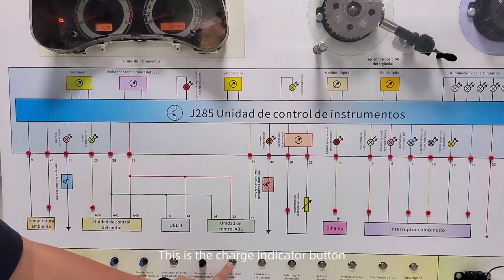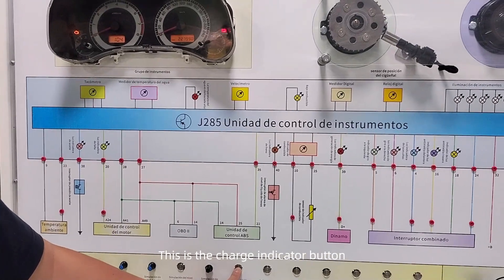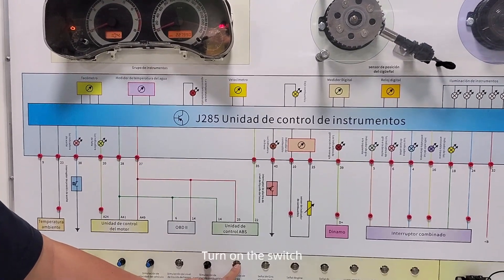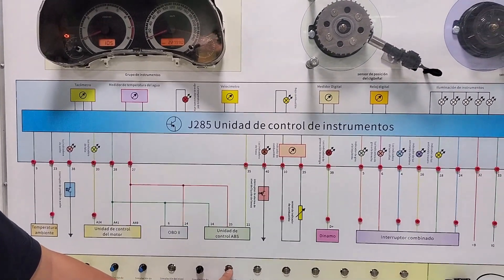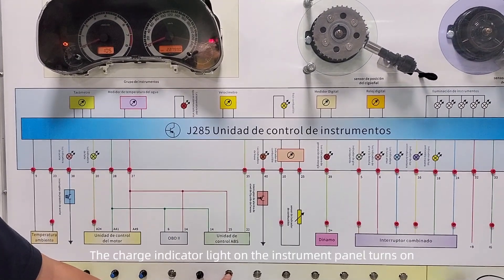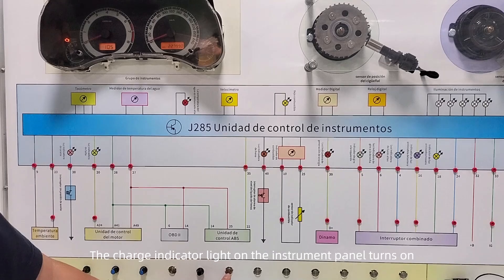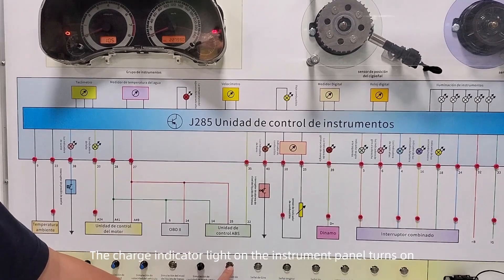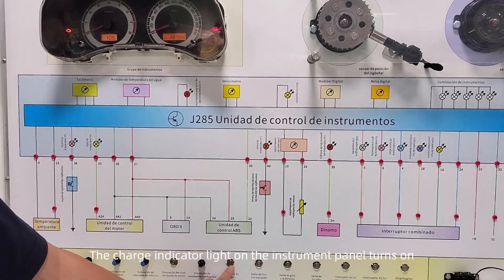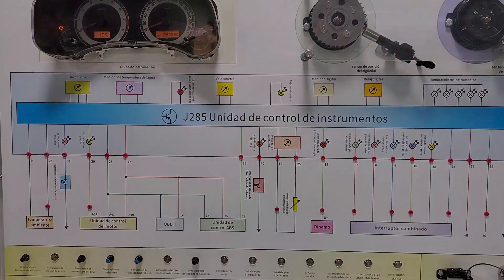This is the charge indicator button. Turn on the switch — the charge indicator light on the instrument panel turns on. Turn off the switch.